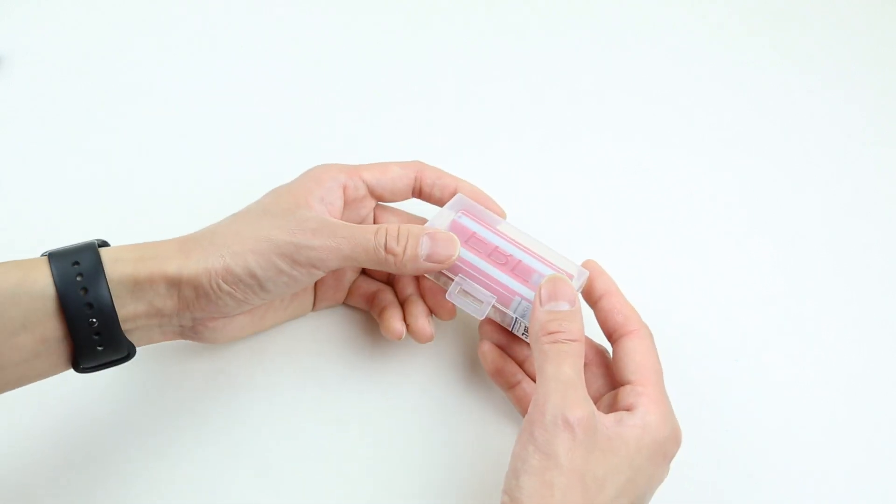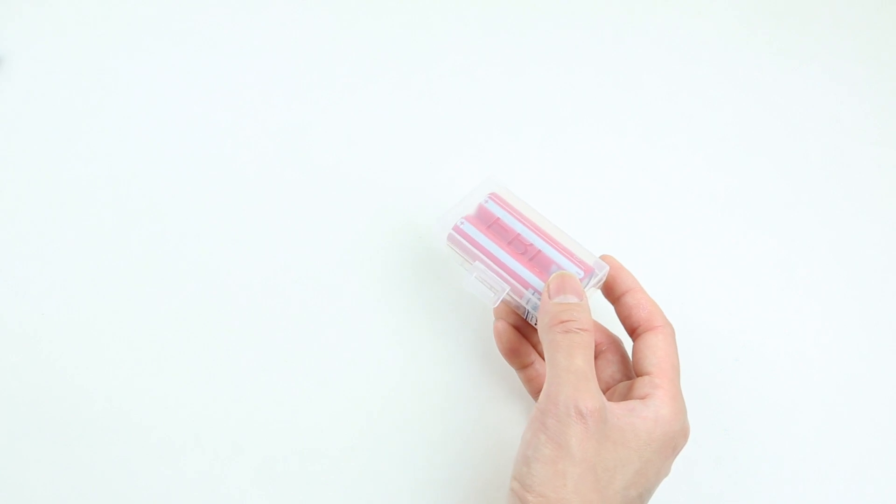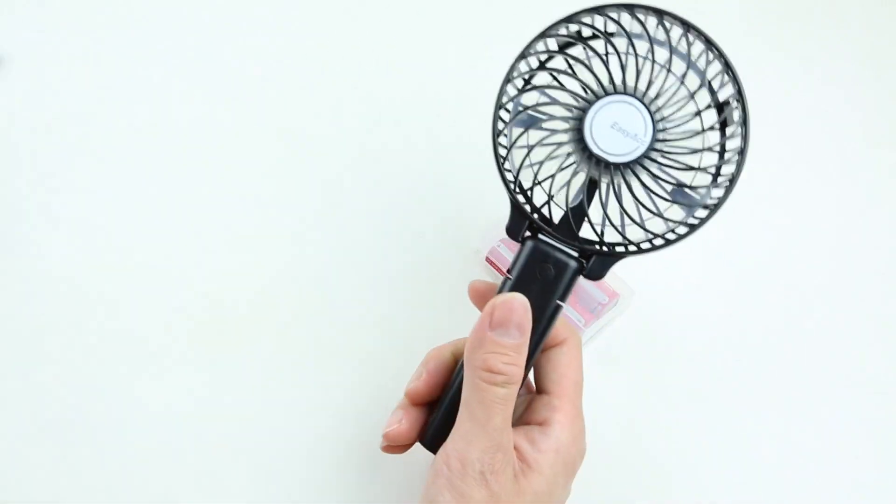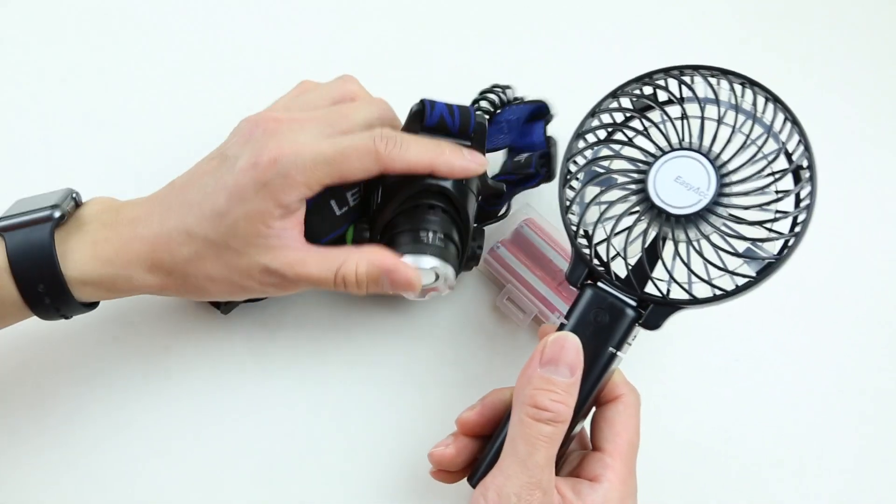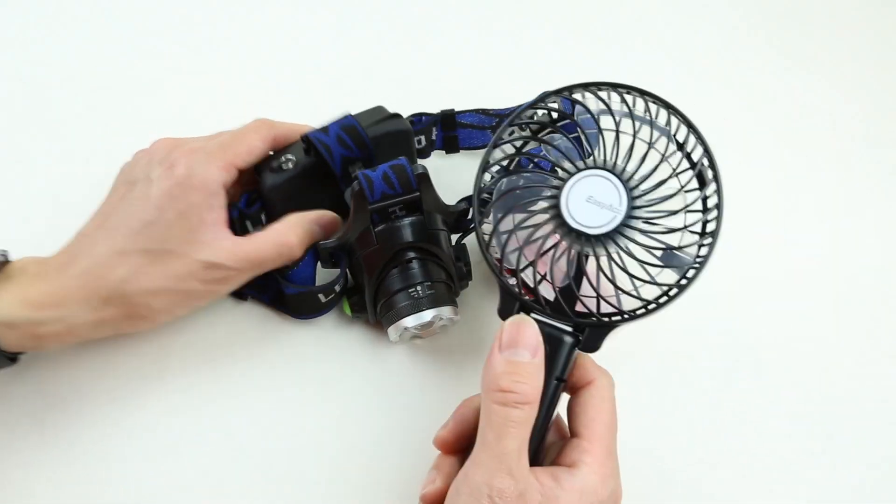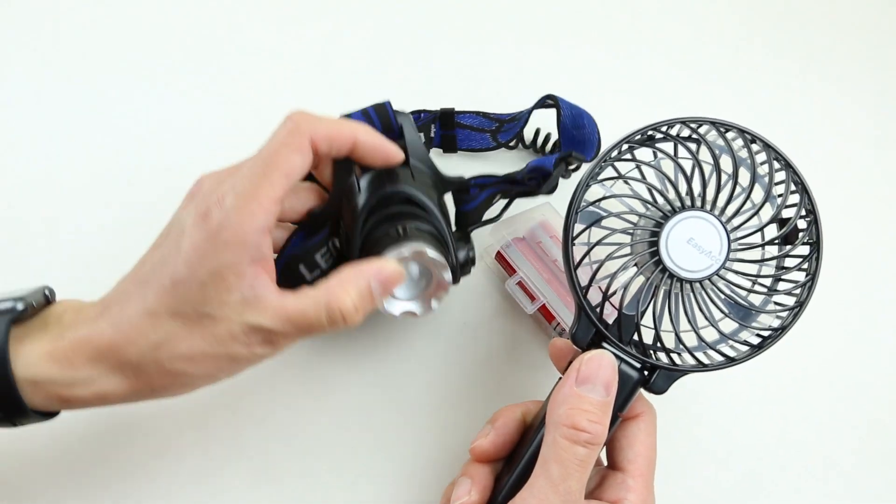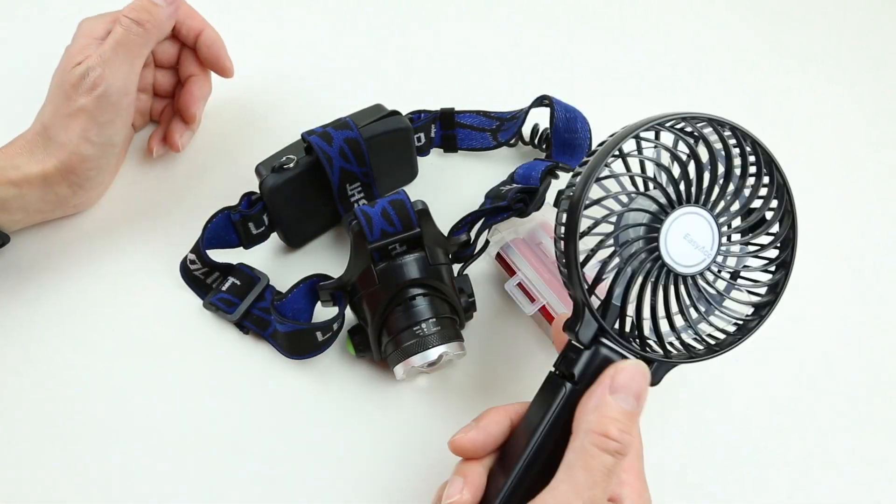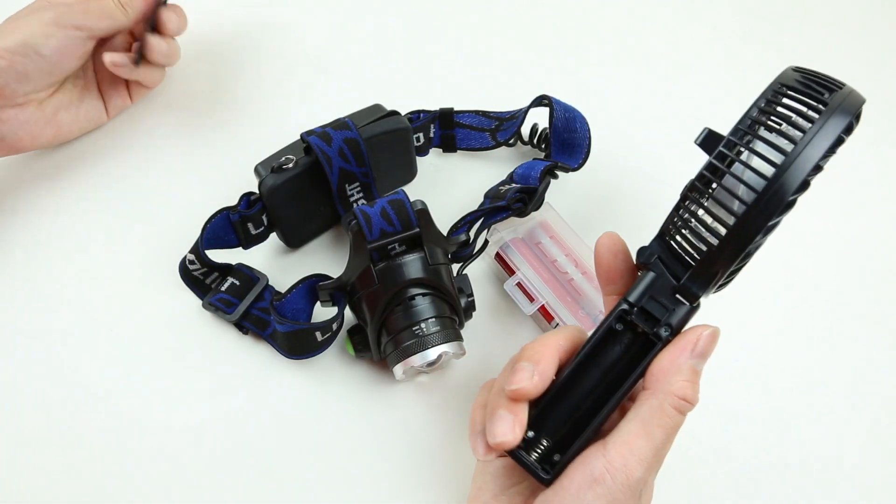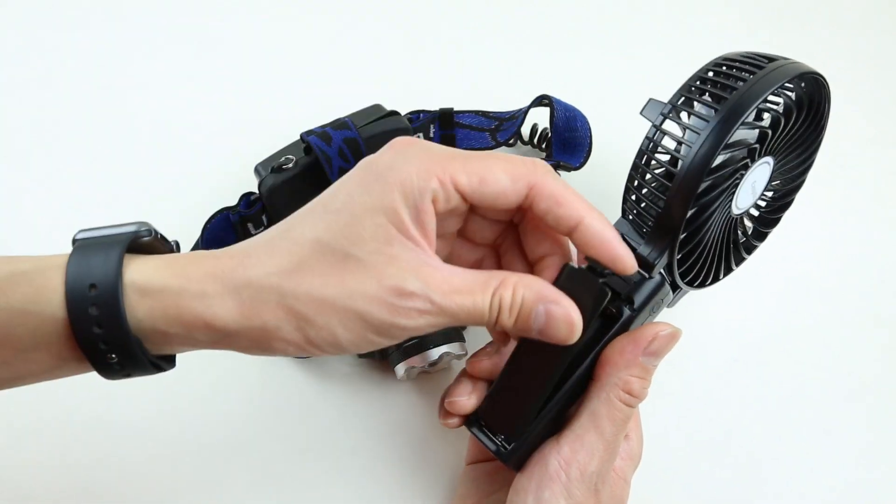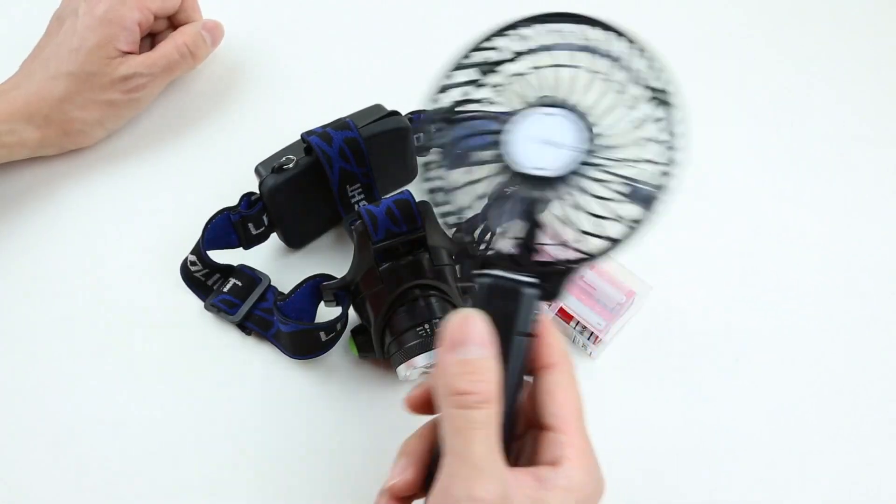Some of the common gadgets that use 18650 cells are like a battery-powered fan, or this headlamp. I'm personally a really big fan of these devices because they don't have built-in lithium batteries, which you cannot swap out when they go bad. And these ones are all using 18650 cells, so when it goes bad, you can replace it with a new one and continue using them.